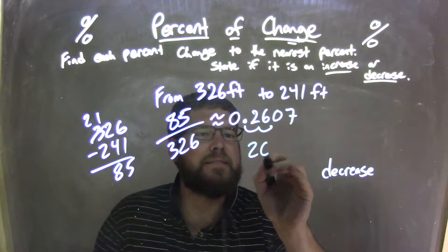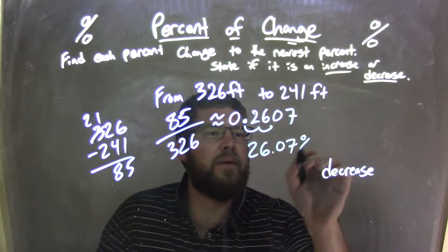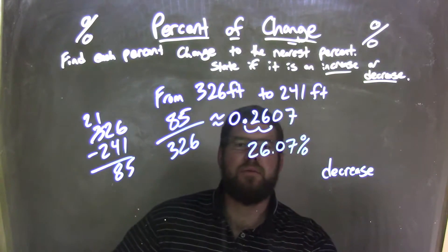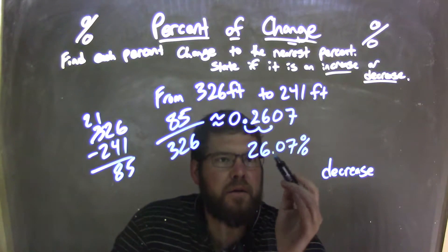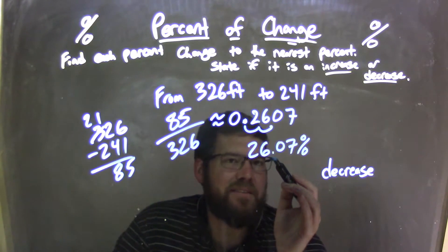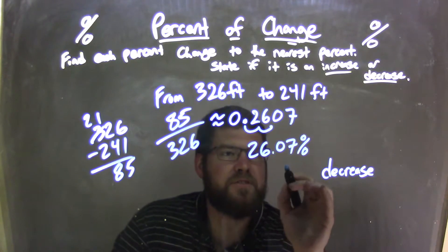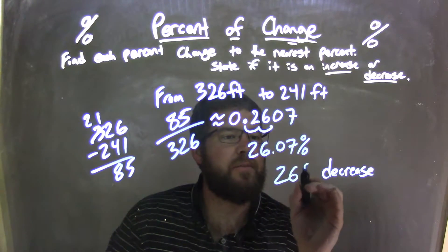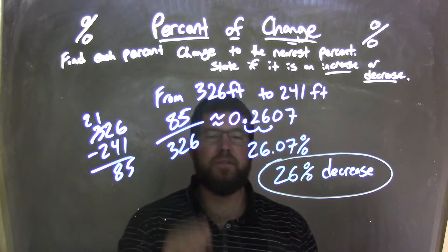We're left with 26.07%, but now that needs to be rounded. That 0 here causes the 6 to stay a 6. That's what's rounding down, essentially. So we just have a 26% decrease as our final answer.